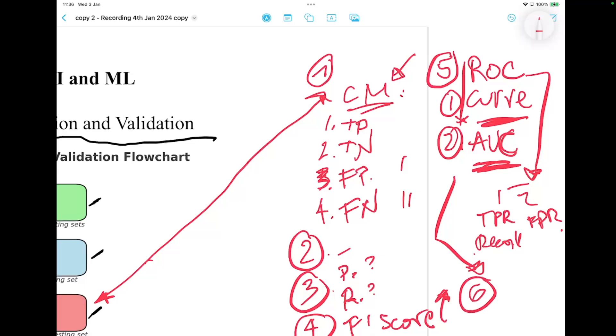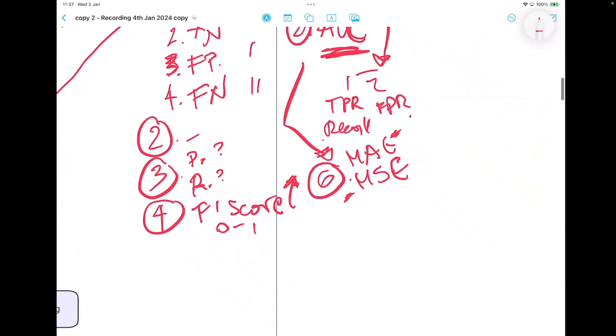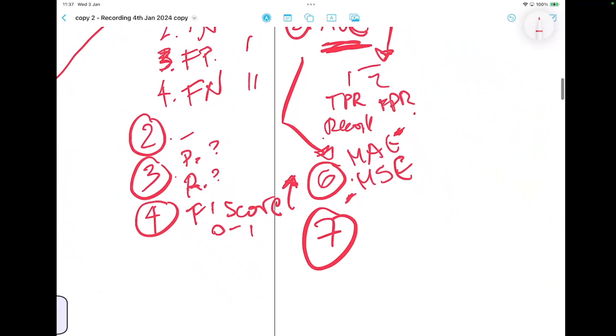The sixth model is the mean absolute error and the mean square error. The mean absolute error measures the average magnitude of errors in a set of predictions, considering the direction. It's an average of the absolute difference between the predicted values and the actual values. And the mean square error measures the average of the squares of the error. That is the average square difference between the estimated values and the actual values. It gives more weight to the actual errors.